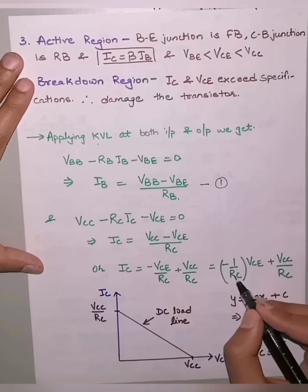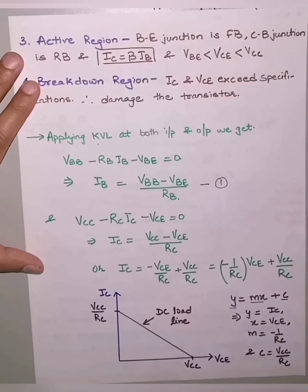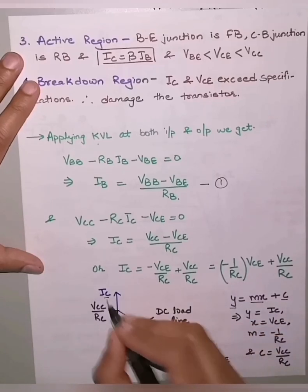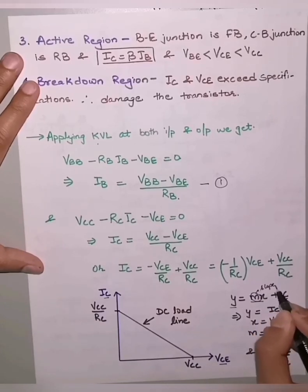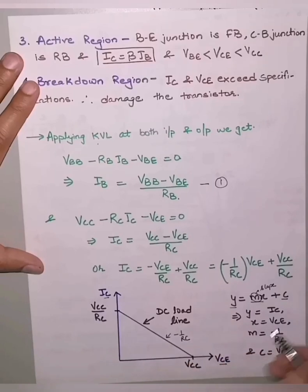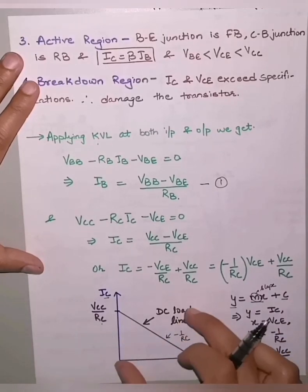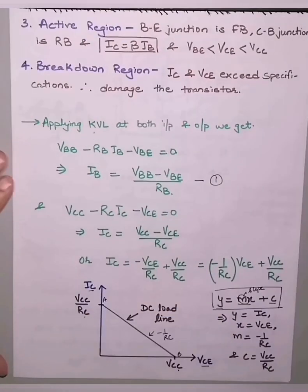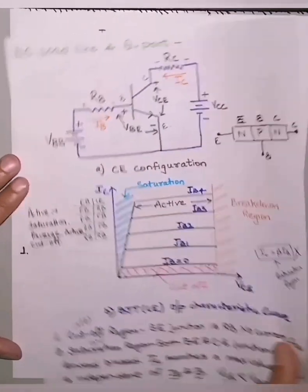This output equation can be written as IC = (−1/RC)·VCE + VCC/RC, which is similar to y = mx + c, where y is IC, x is VCE, the slope m is −1/RC (decreasing), and the y-intercept c is VCC/RC. This is the DC load line. Combining this load line with the previous common emitter characteristics curve gives us the full operating picture.